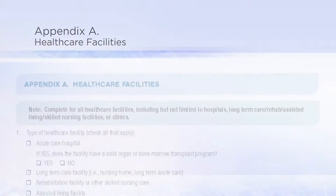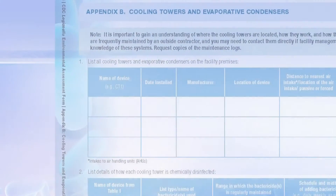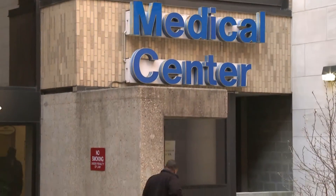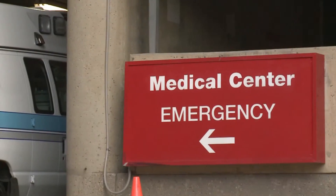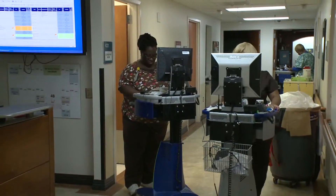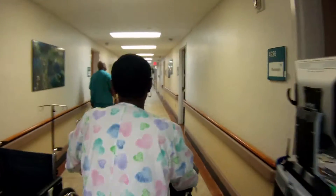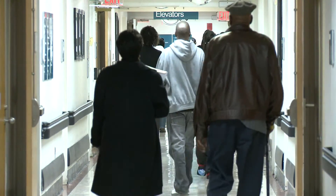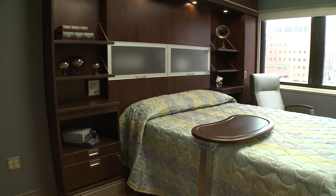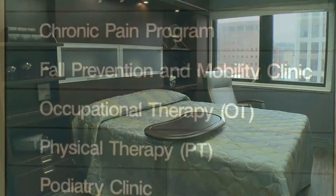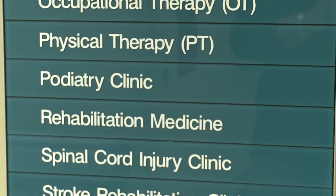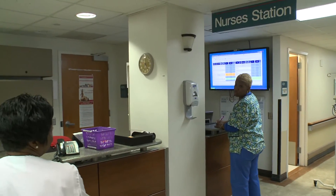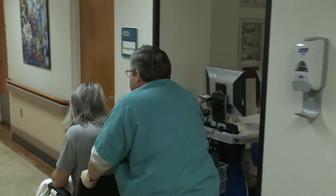Now let's take a quick look at the appendices, which are not used for every environmental assessment. Appendix A focuses on health care facilities, which can range from small clinics and doctor's offices to urgent care centers, hospitals, rehabilitation facilities, and assisted living homes. Outbreaks often occur in these settings because they house particularly susceptible populations. Health care facilities can be large, with premise plumbing systems complicated by construction and new additions. This section gathers information about how sick and immunocompromised the patients are; however, keep in mind that any hospitalized patient is at risk. It also asks whether there has been a previous health care-associated case at the facility, which could indicate an ongoing problem.